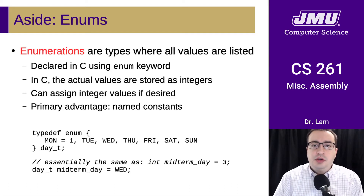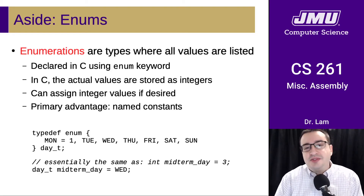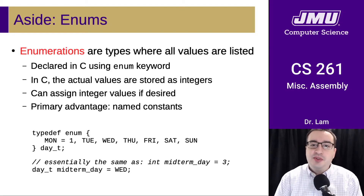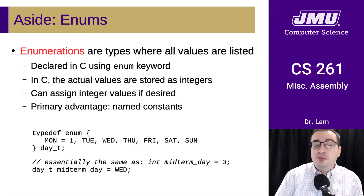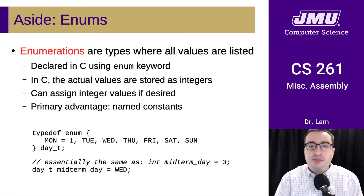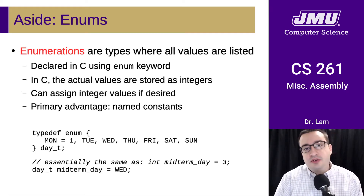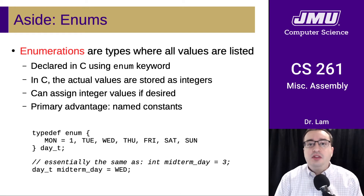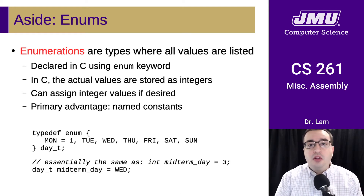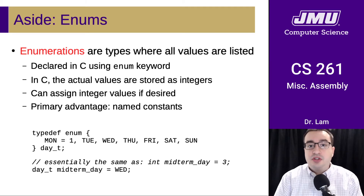I also wanted to include a quick aside here because I just realized that we used an enumeration in the previous example, and I don't think your textbook actually covers these. You may have seen these in Java, but basically there are types where all of the potential values are just listed out during the declaration.